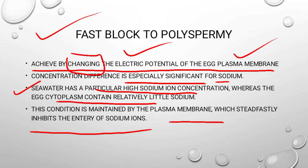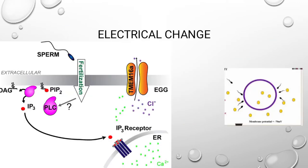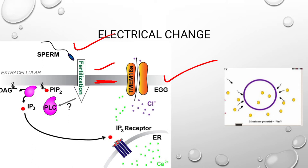How does electrical change occur? Here is the plasma membrane of the egg and here is the sperm. As the sperm touches the egg, the fertilization process occurs. The sodium ion concentration inside the membrane is changed, and due to this electrical change, the fast block of polyspermy is achieved.